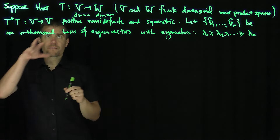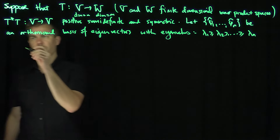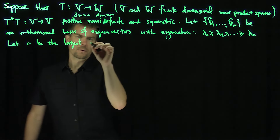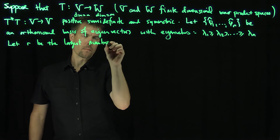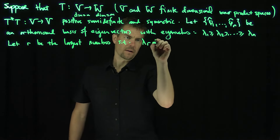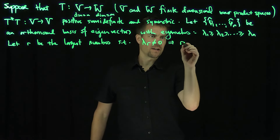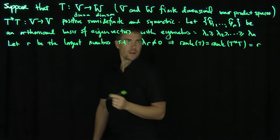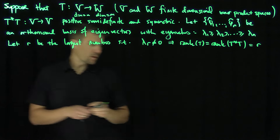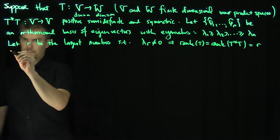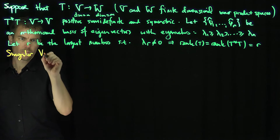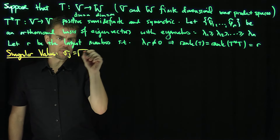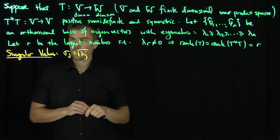If the rank of T is equal to r, then let r be the largest number such that lambda-r is not equal to zero. The rank of T equals the rank of T*T, which equals r. Our singular values are sigma-j, which is the square root of lambda-j, arranged in the same descending order.